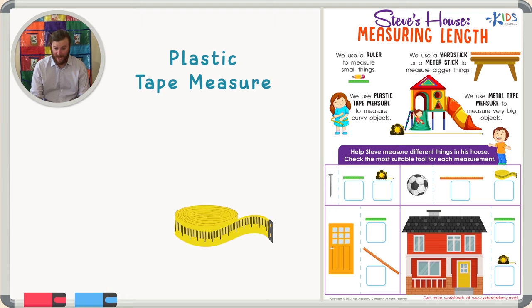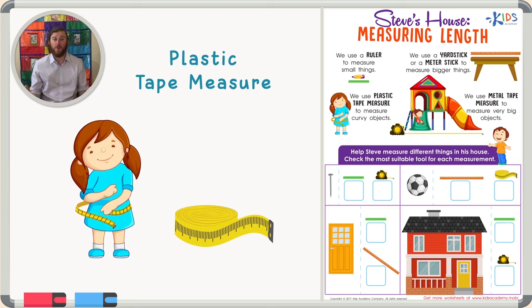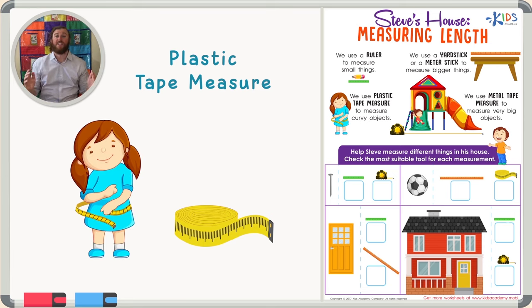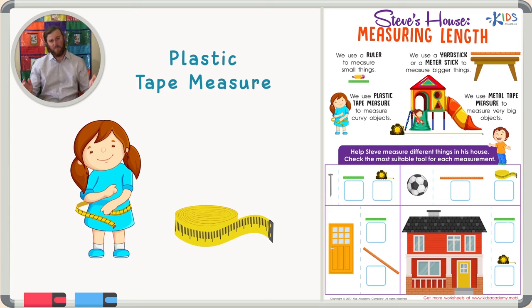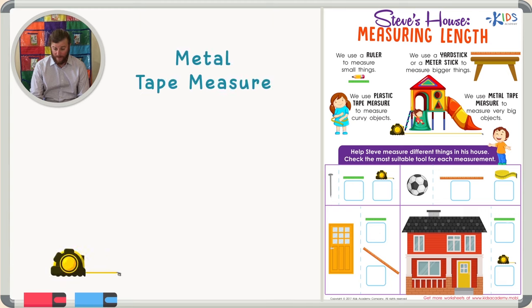The next thing I'd like to talk to you about is a plastic tape measure. A plastic tape measure is really cool because you don't have to just measure straight objects. The tape measure can bend and can be used to measure curvy objects like your hips. A plastic tape measure is a really unique measuring tool that can help measure objects that aren't perfectly shaped.